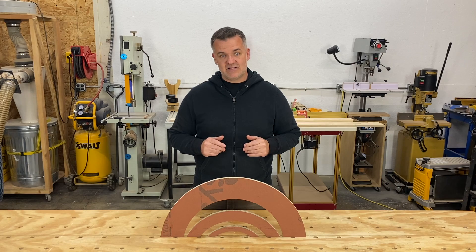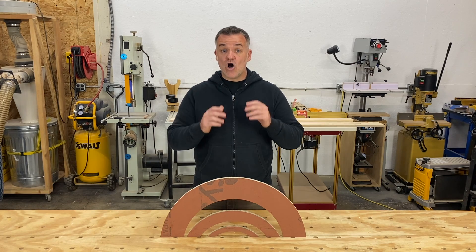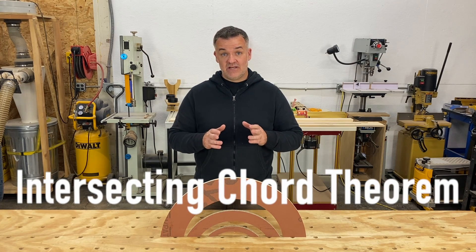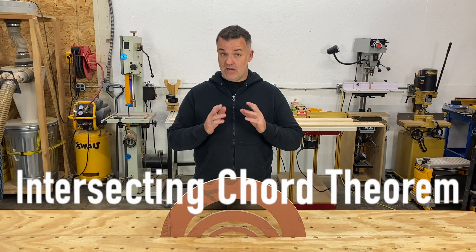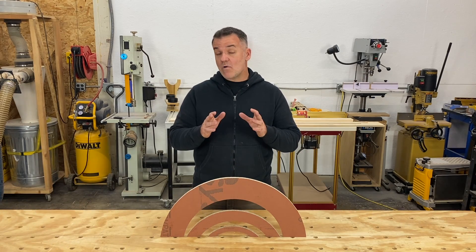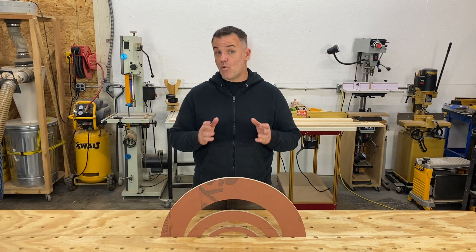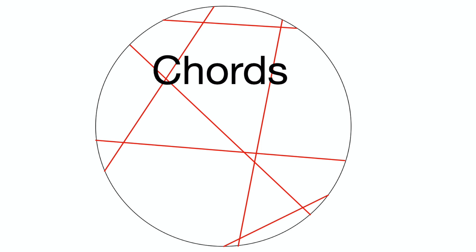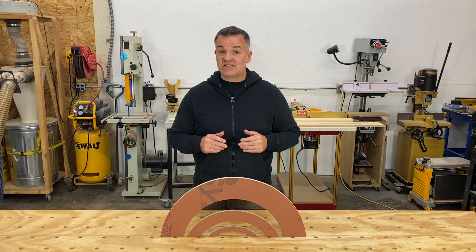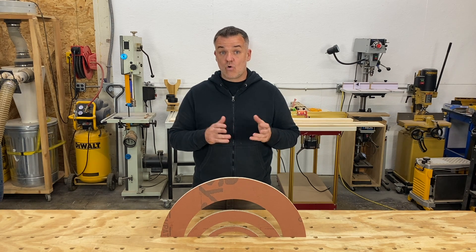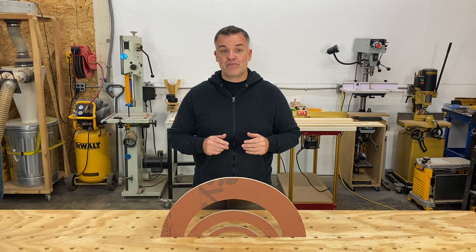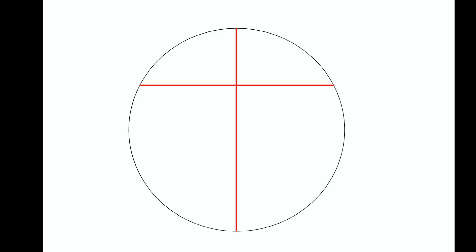The last concept is called the intersecting chord theorem. Don't worry — it's not as hard as it sounds. Intersecting just means two lines that share a point; where they cross is the intersection. A chord is any line from one surface to another in a circle. And theorem is just a law or rule.